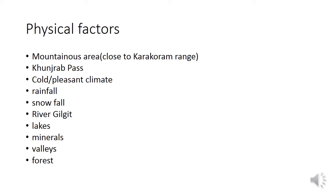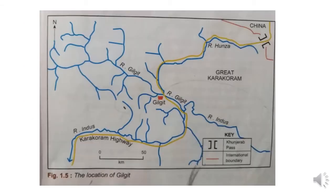River Gilgit is found there; there are lakes, valleys, minerals, and natural vegetation. On the map, the key shows Khunjerab Pass connecting China with Pakistan, where the Karakoram Highway starts. You can see the Karakoram Highway along with Hunza River, and on the eastern side the Karakoram Range. Moving southwards you can see the confluence of River Gilgit and Hunza.